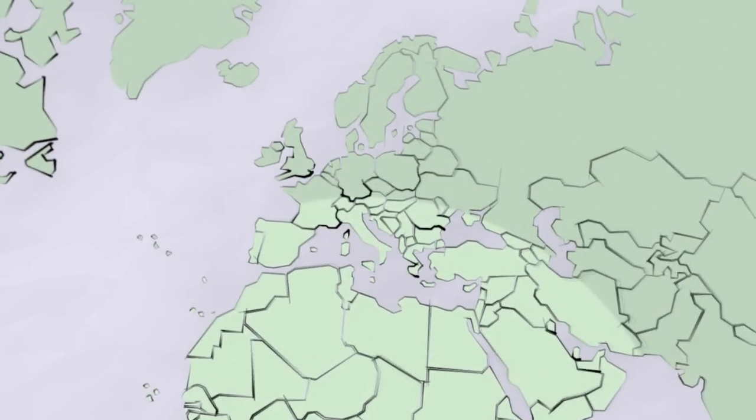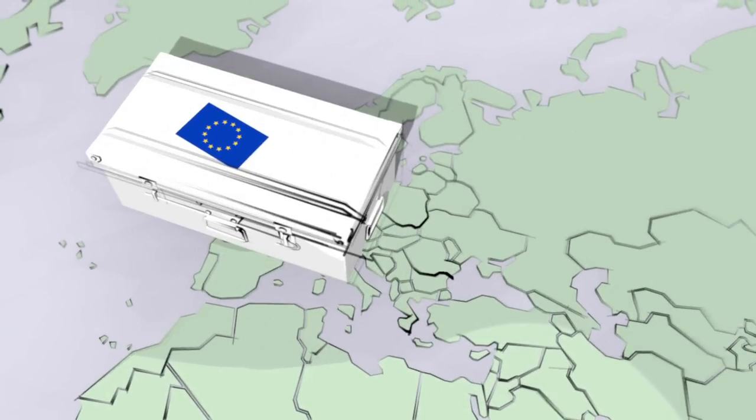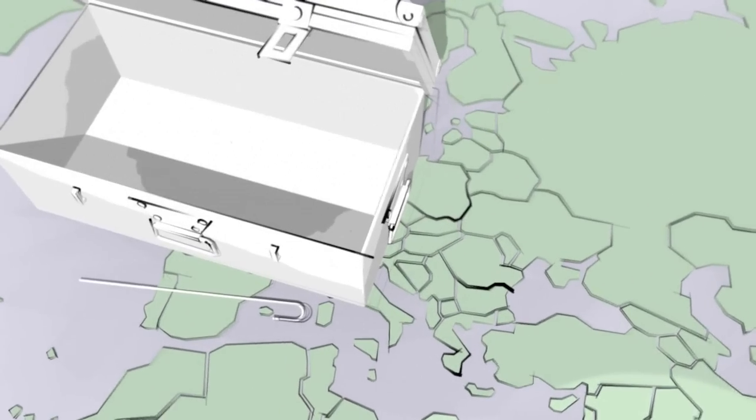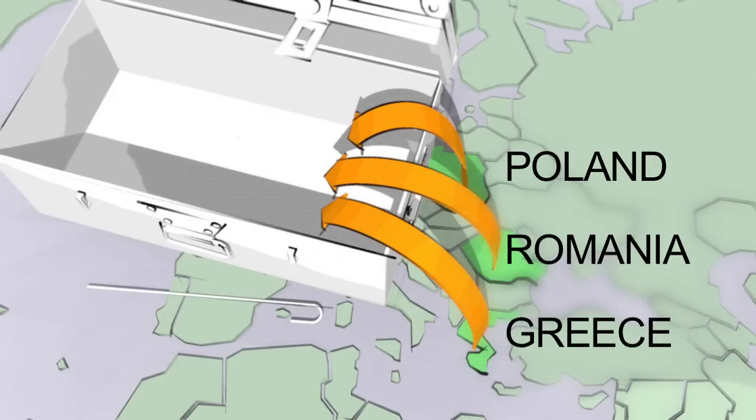However, it is Europe as a region that attracts the largest number of migrants, with 72 million currently in the continent. The migration comes mainly from Eastern Europe, with people from Poland, Romania, and Greece moving to the west of the continent.